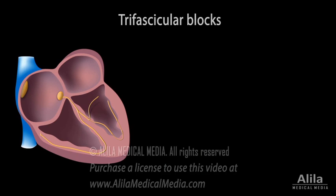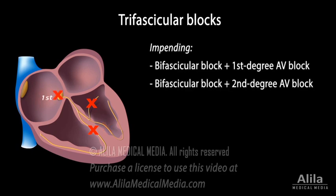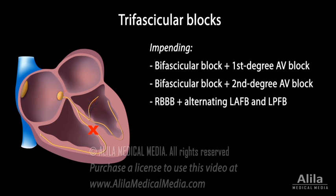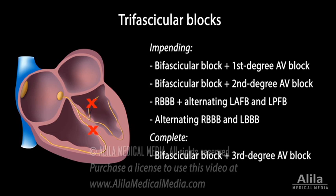The term trifascicular block means blockage of all three fascicles, which would equal a complete heart block. In practice, however, it is used to refer to a variety of situations, including a bifascicular block plus a first degree or second degree AV block, a right bundle branch block plus alternating LAFB and LPFB, alternating right and left bundle branch blocks, and bifascicular block plus third degree AV block.